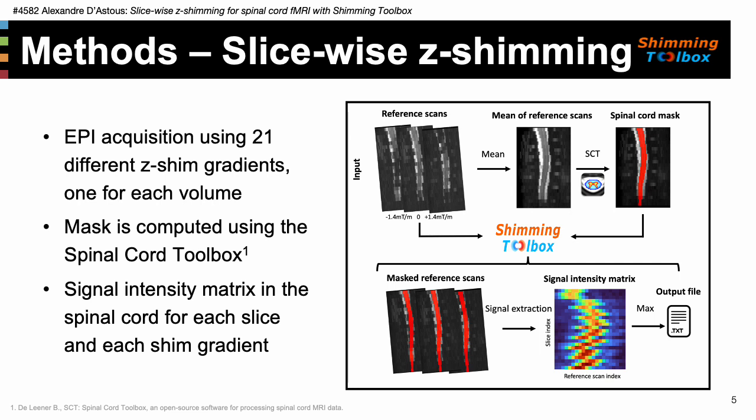The processing of those coefficients was implemented in shimming toolbox and used to generate a text file to perform dynamic z-shimming. Overall, the processing took 15 seconds, including DICOM-to-NIfTI conversion, spinal cord extraction, and shimming calculations, which itself was around one second. This allows no time to be wasted while shimming at the scanner.